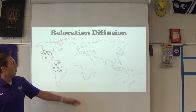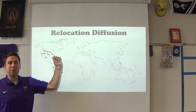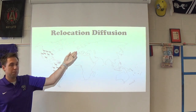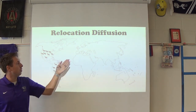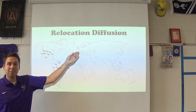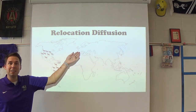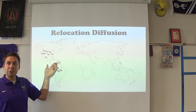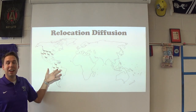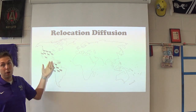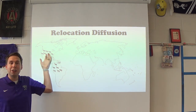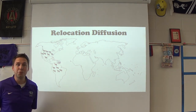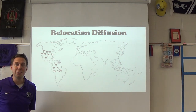Some words and terms you want to keep in mind: the term hearth. Hearth is where something begins. We see the horse brought over to the Americas began in Spain. Across from the ship was the vector, and now they've replicated and multiplied over here. That is relocation diffusion.